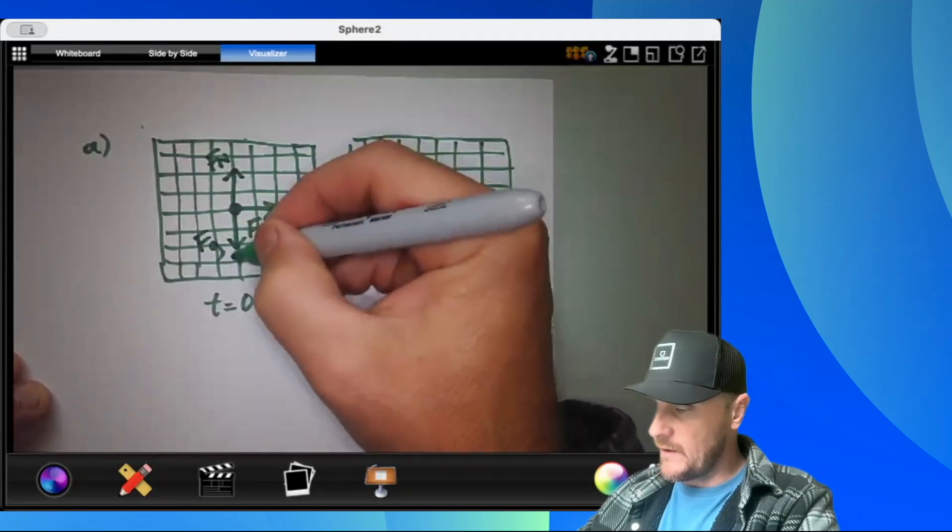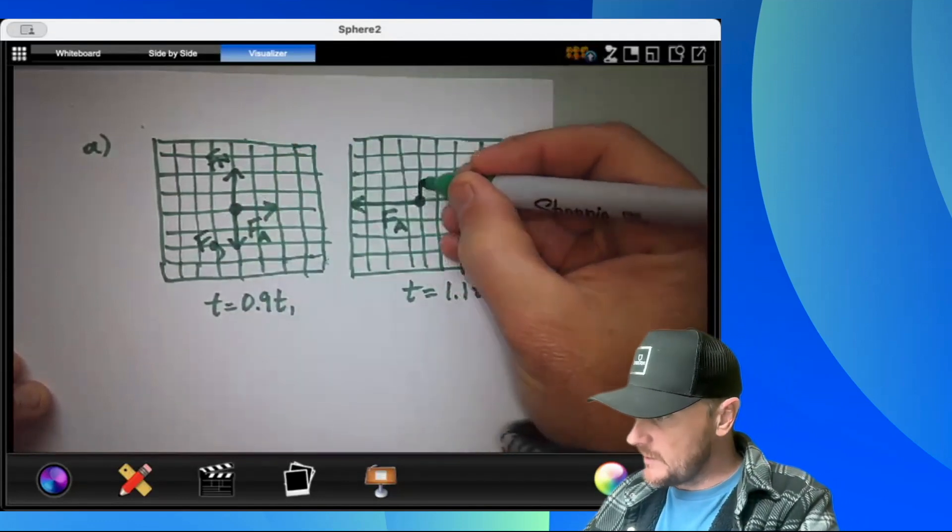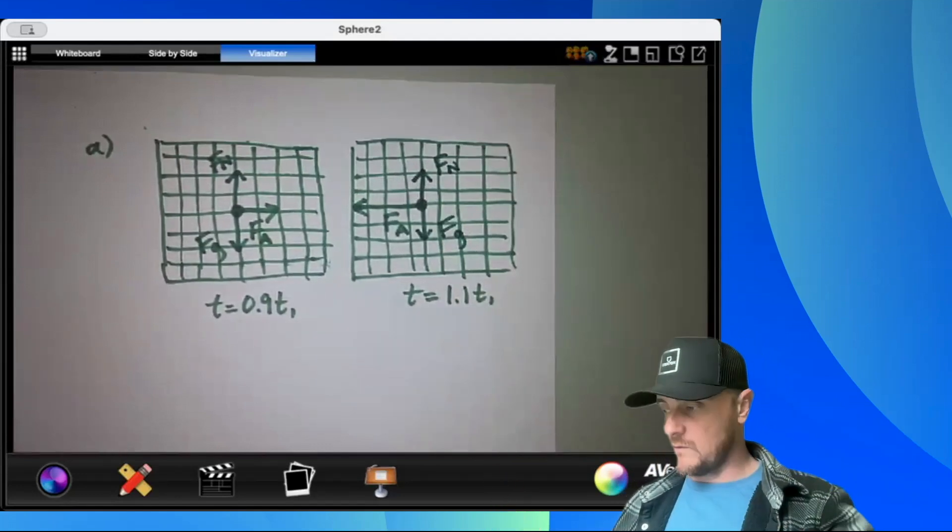And in this case, they are equal in magnitude but opposite directions. And same thing over here. There we go. A is all done. Let's go on to B.